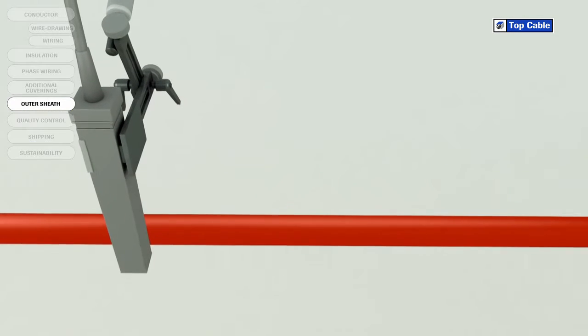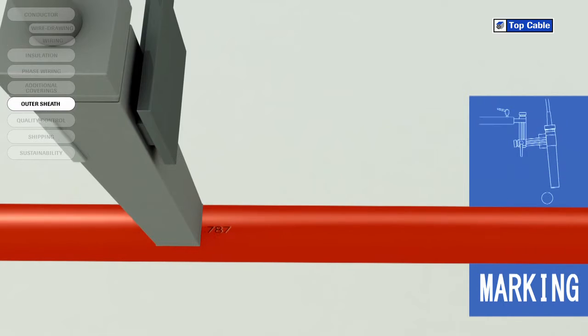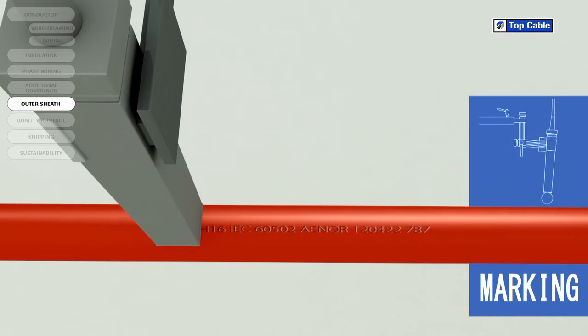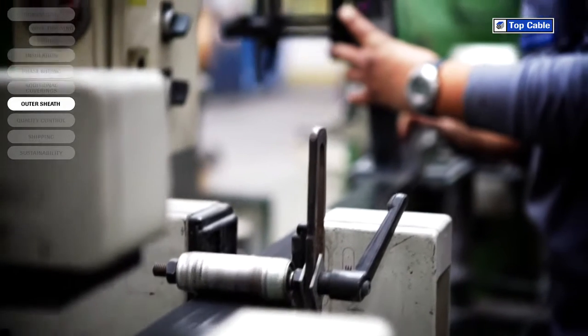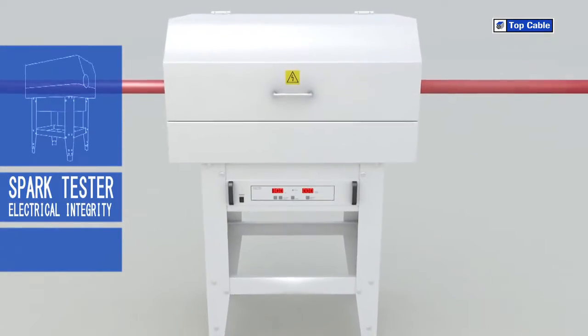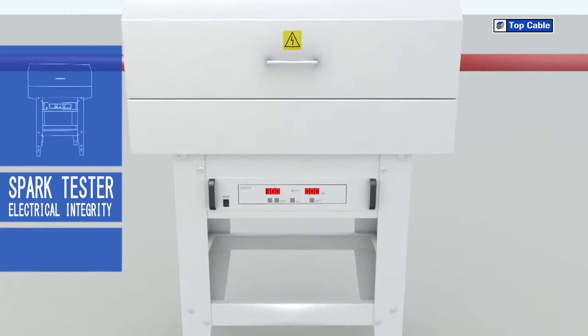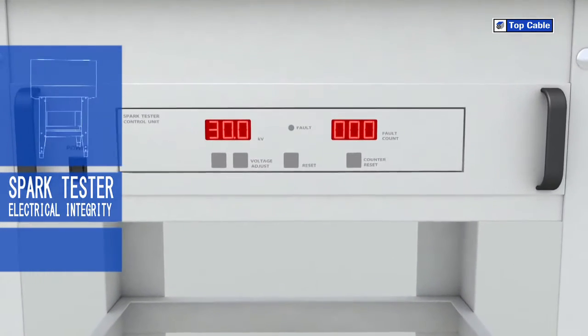So that all TOP Cable customers can correctly identify their cables, the cables are marked with the most important information: manufacturer, trade name, cable name, number of conductors, cross section, construction regulation and standards, CE marking and other information of interest, such as the product's certification. There is also a meter-by-meter mark on the cable to help our customers with their stock control.